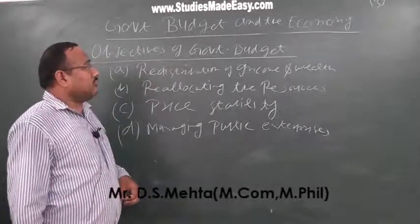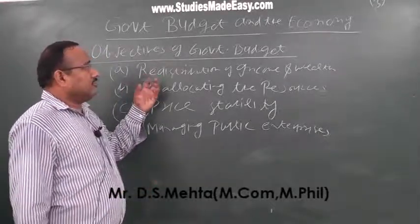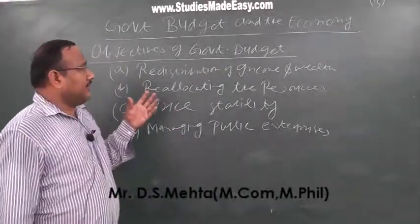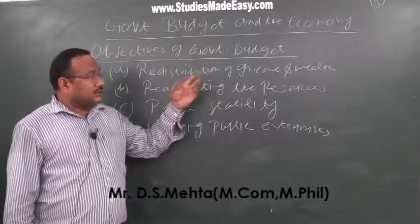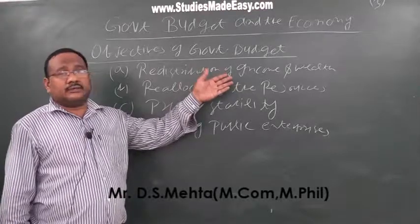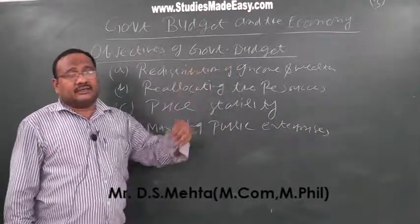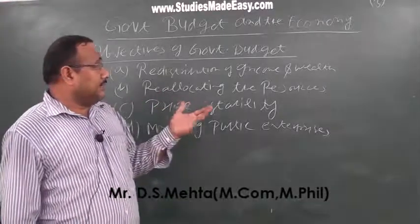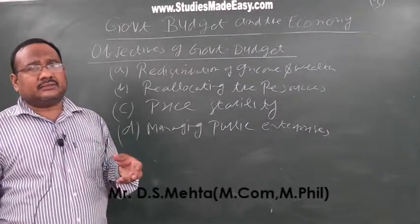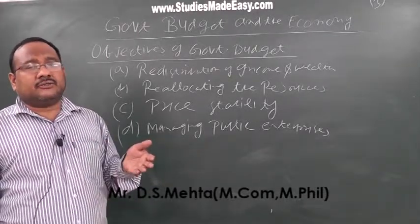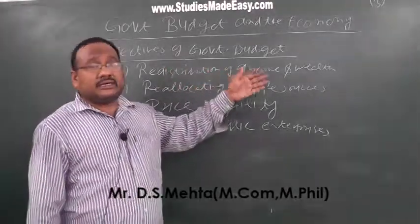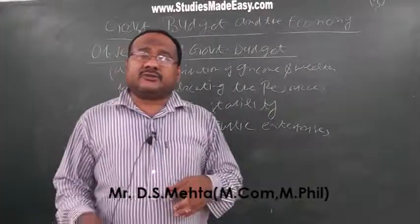The next is the objectives of government budget. What are the objectives? The first objective is Redistribution of Income and Wealth, which means reducing inequality or reducing poverty. The main objective of government is to reduce poverty or to reduce inequality, and government tries to distribute income and wealth in a manner that it could reduce poverty.